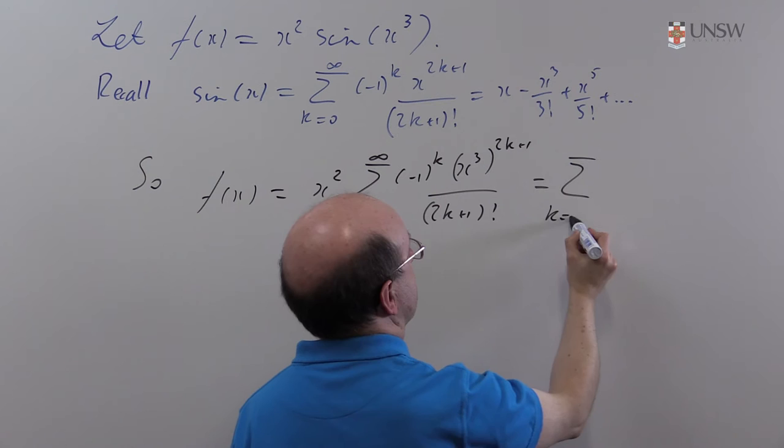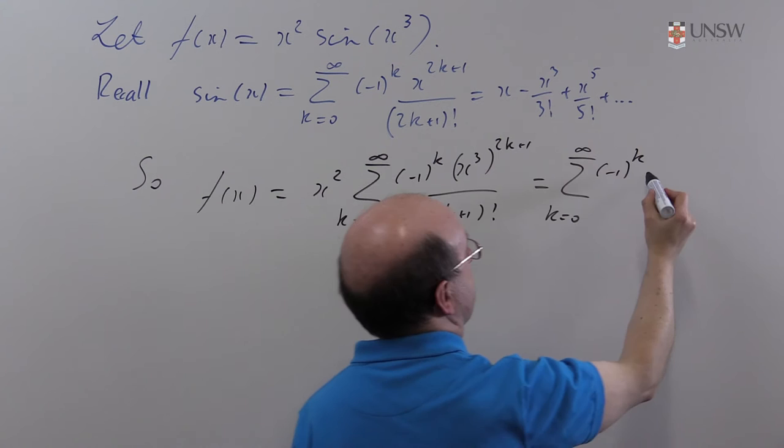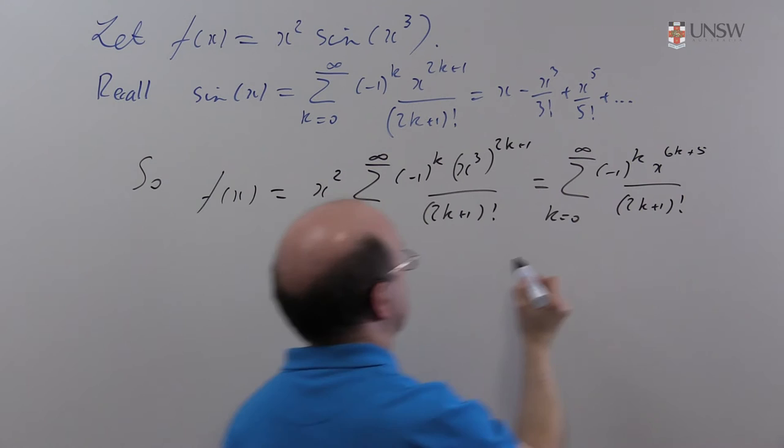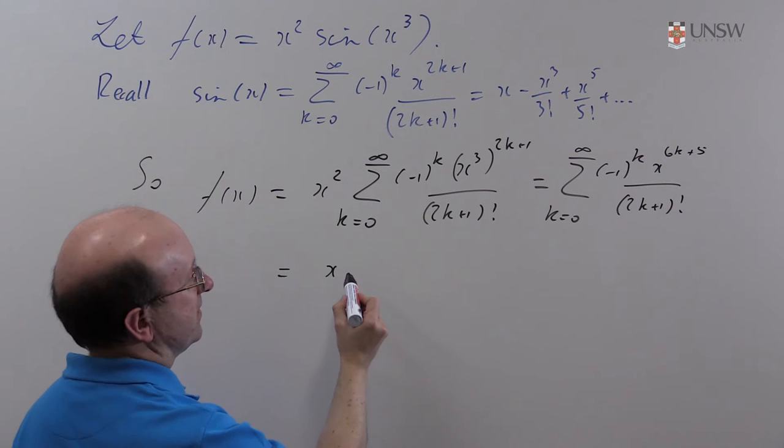Well, we might as well bring the x² in while we're doing it. So the sum from k=0 to infinity of (-1)^k x^(6k+5) / (2k+1)!.